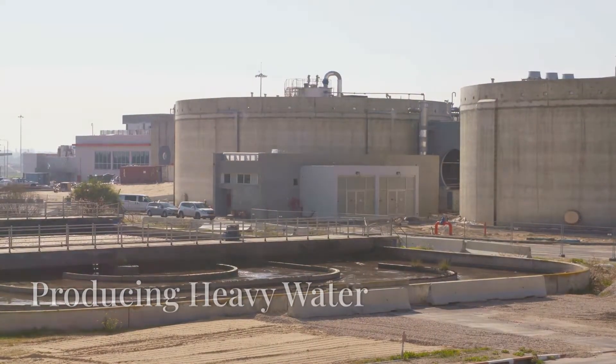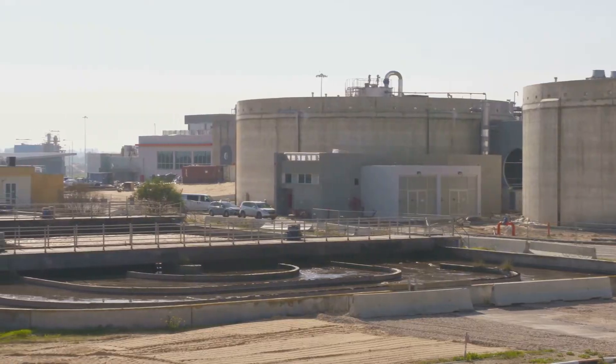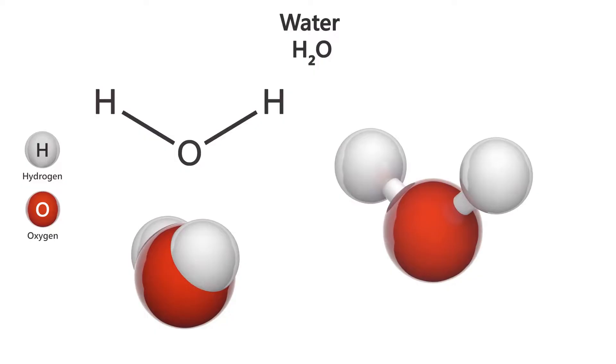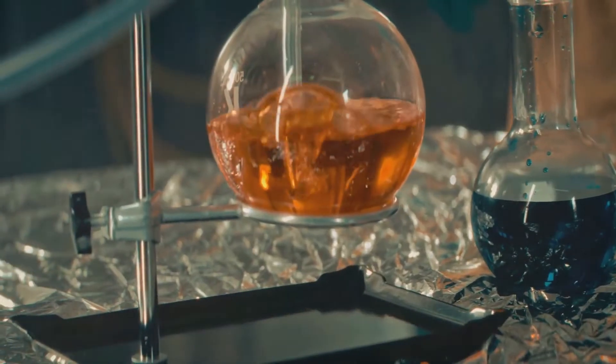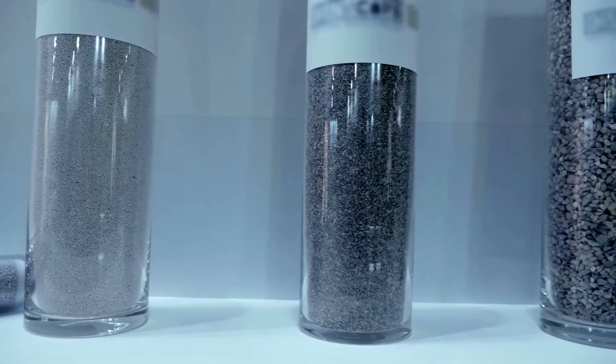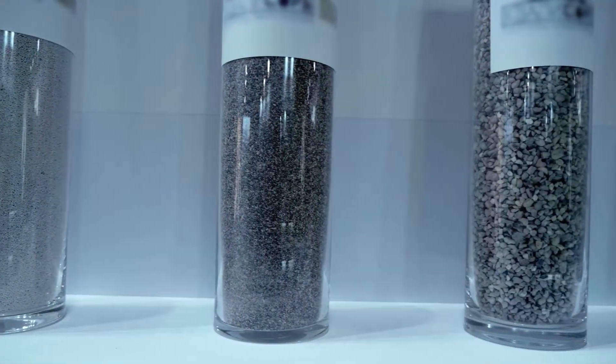Producing heavy water is complex due to its low natural abundance. Deuterium represents only 0.015 percent of hydrogen in water. The Girdler sulfide process is a common method, using isotopic exchange between water and hydrogen sulfide gas. Electrolysis is another method, though energy intensive.